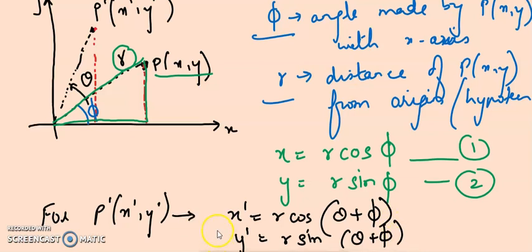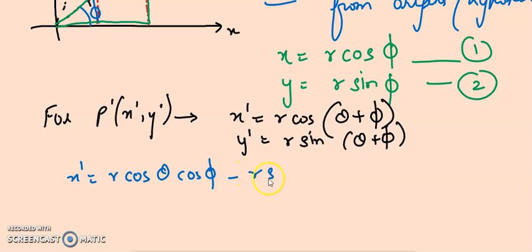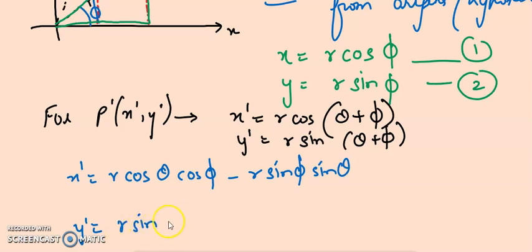Now I expand these equations. x' becomes r·cos(theta)·cos(phi) minus r·sin(theta)·sin(phi). Similarly, y' will be r·sin(theta)·cos(phi) plus r·sin(phi)·cos(theta), using basic trigonometric identities.